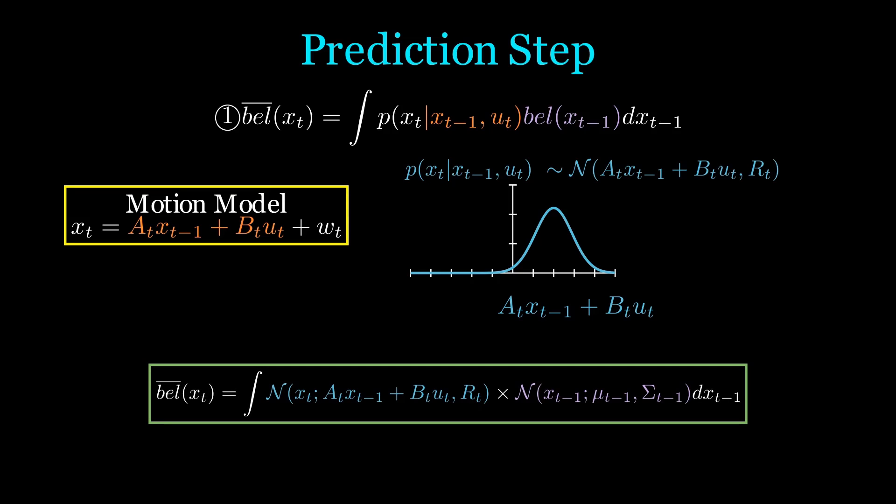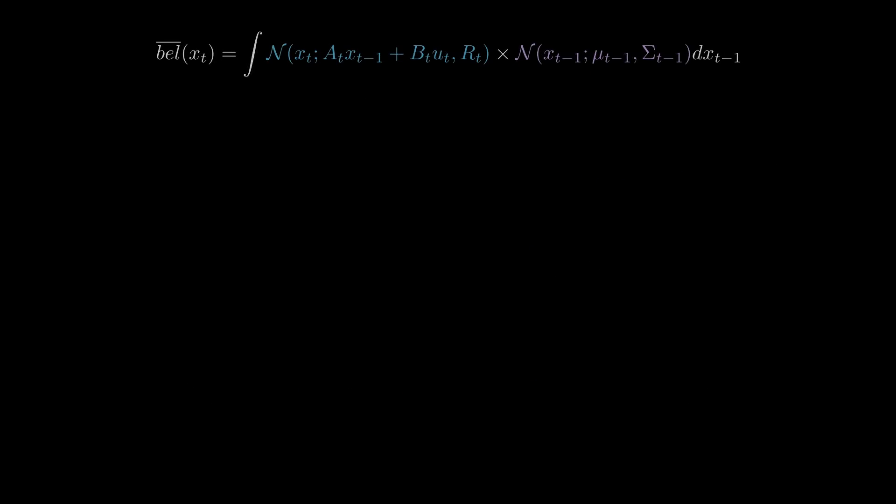Now we have the integral of two normal distributions that both depend on Xt minus 1. Note the notation of these normal distributions. We will explicitly include the random variable as the first term since the mean and covariance may depend on other random variables. I believe the process of deriving how this computation is done is clever and is instructive. However, the actual manipulations at each step, such as the rearranging and matrix multiplications, are tedious and non-educational, so they will be ignored.